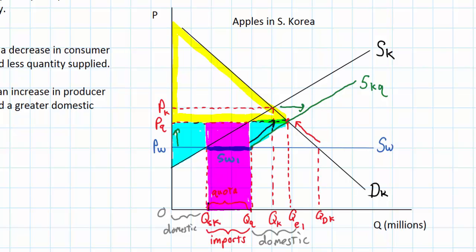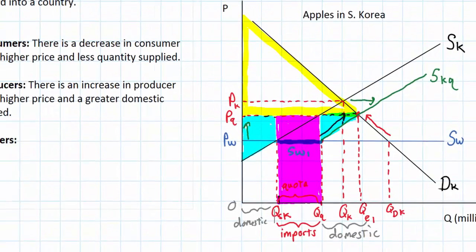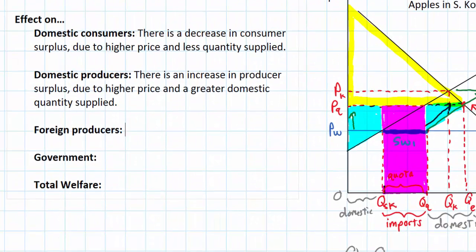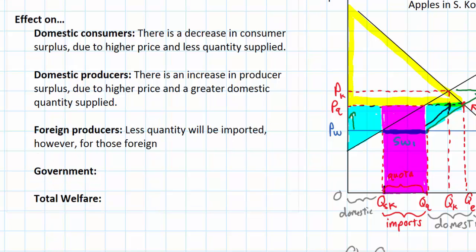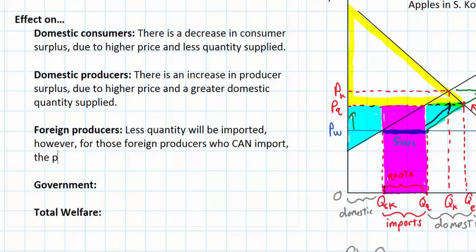Overall, the quota most likely reduces foreign producer revenue. However, for those apple producers which are still able to sell their apples in the Korean market, they're selling them for a higher price which they themselves get to keep, since this is not a tax that has to be paid to the government. So the quota has a mixed effect on foreign producers: less quantity will be imported, but foreign producers who can import are receiving a higher price and may in fact earn greater profits for the apples that do come into the country.